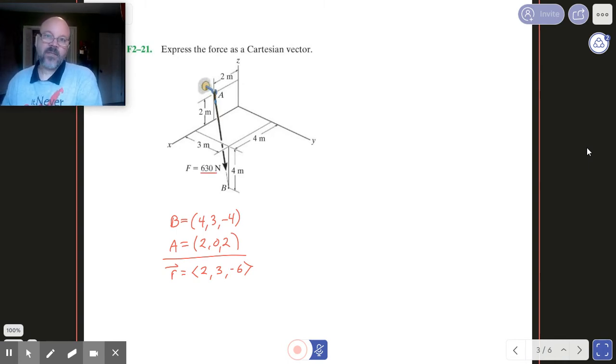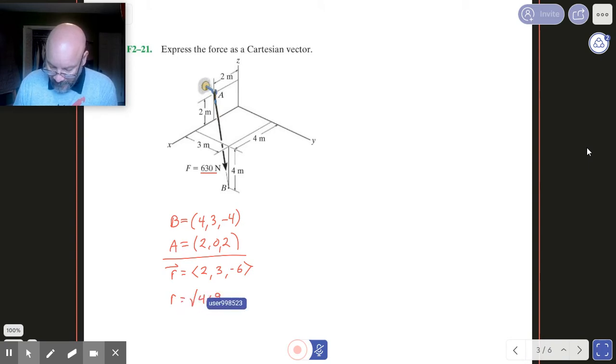And so my vector r, if we look at that thing there, if we find the magnitude on that, let's go ahead. Let's just take a look at that super quick. I'm going to have 4 plus 9 plus 36. Let me just double, triple check that.